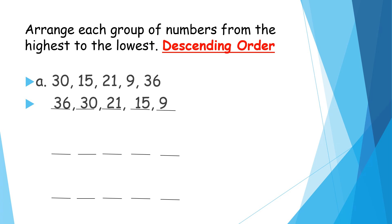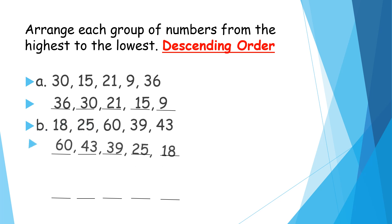Now let's move on to the next exercise. Exercise B: number 18, number 25, number 60, number 39, and number 43. Write your answer below. I will give you 15 seconds to answer it. And the count starts now. Time's up. Now let's check your answer. And the answer is number 60, number 43, number 39, number 25, and number 18. Hope your answer is correct.